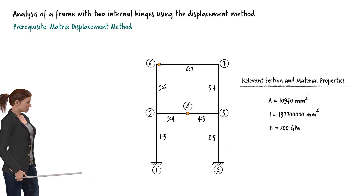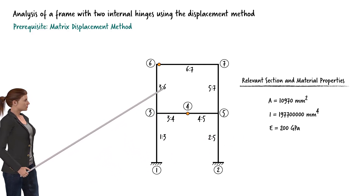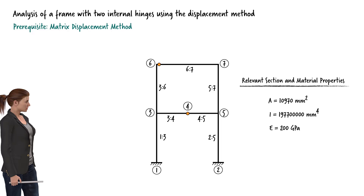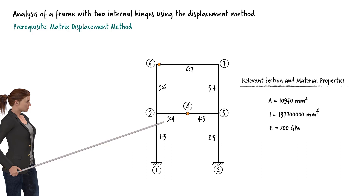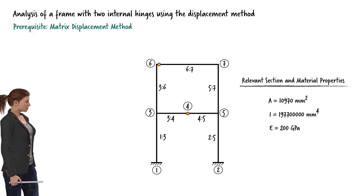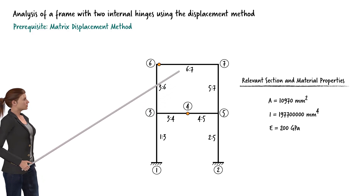Since columns 1-3, 2-5, 3-6, and 5-7 have the same length, orientation, section, and material properties, they share the same stiffness matrix. Similarly, beams 3-4 and 4-5 have the same stiffness matrix. Therefore, we need to write three member stiffness matrices: a matrix for the columns, a matrix for the short beams, and a matrix for the long beam.